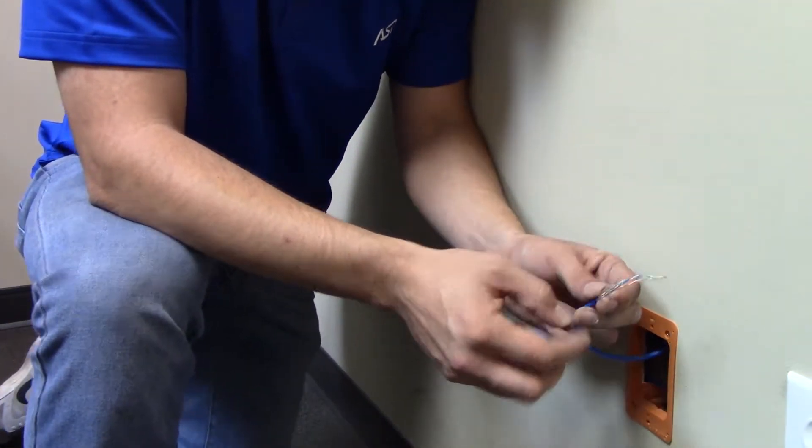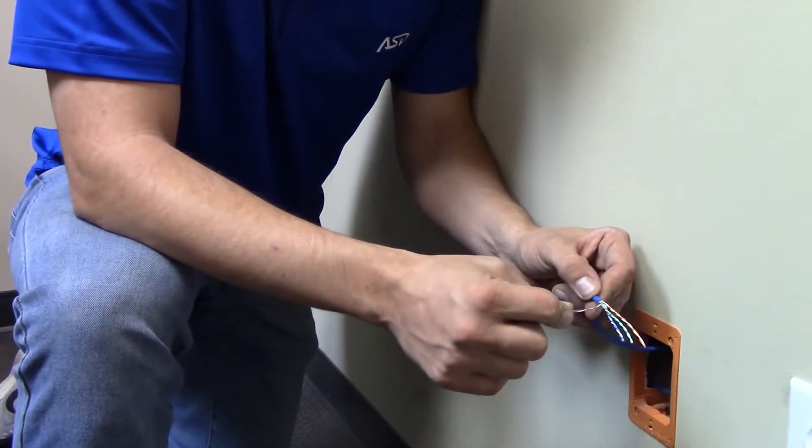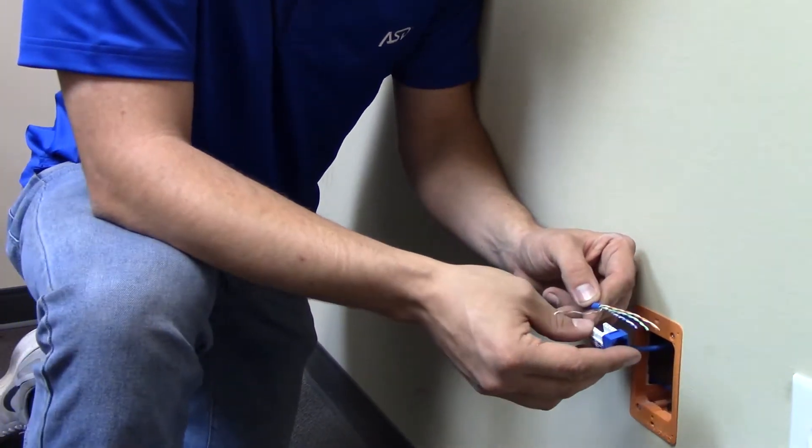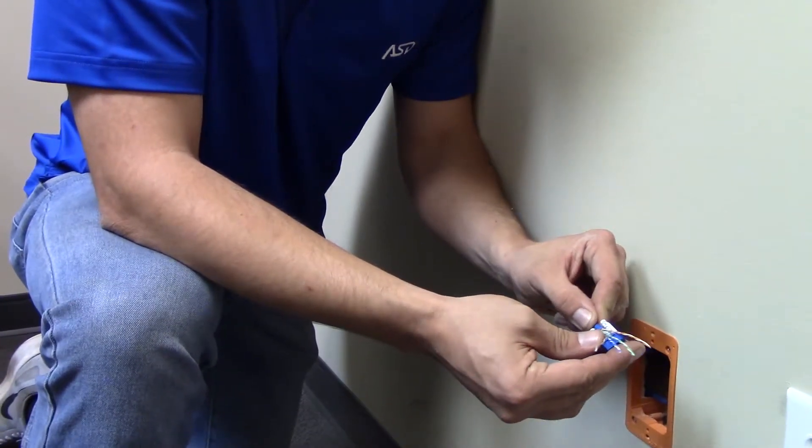The same four pairs that you have in your cable. Whenever you're terminating a cable, you want to make sure that you untwist as little as possible. So whenever I put it in there, I don't want any extra sheathing showing out of the jack like this. I want it all the way down here like this.